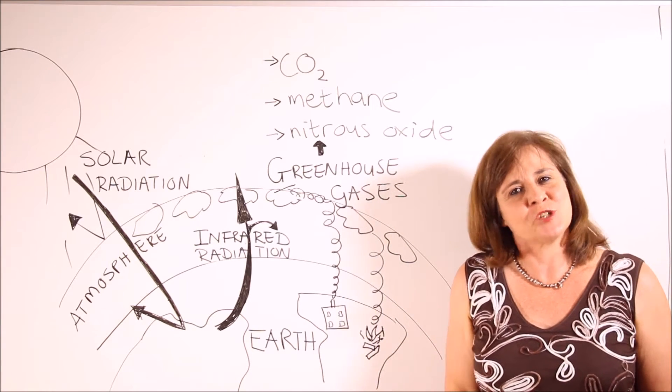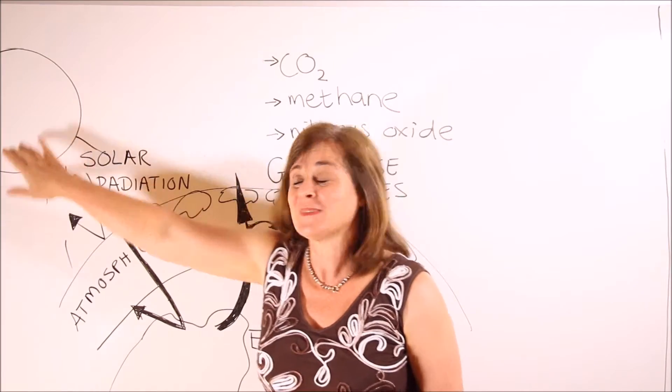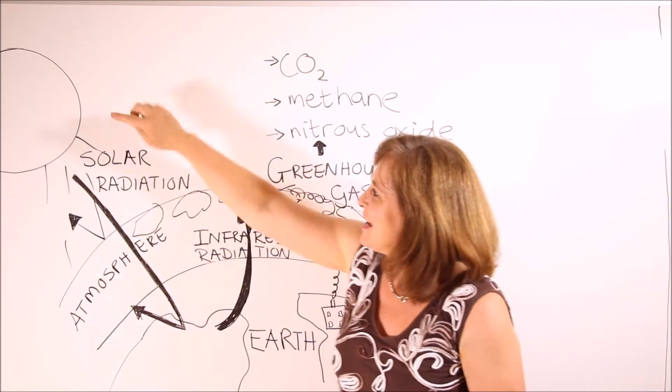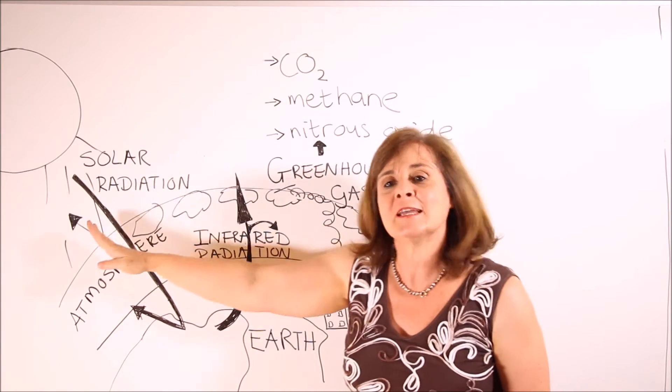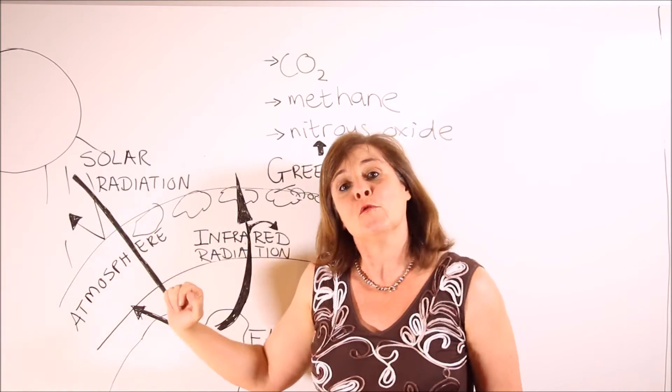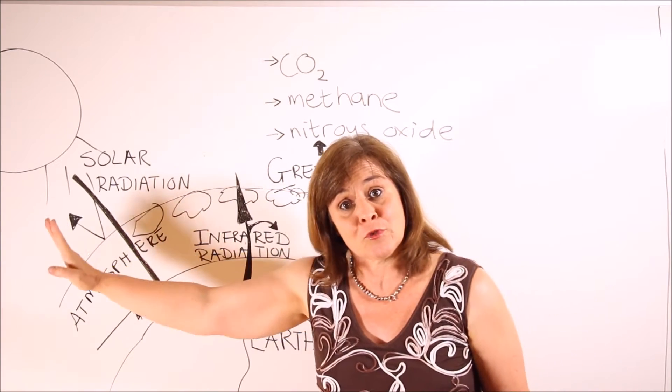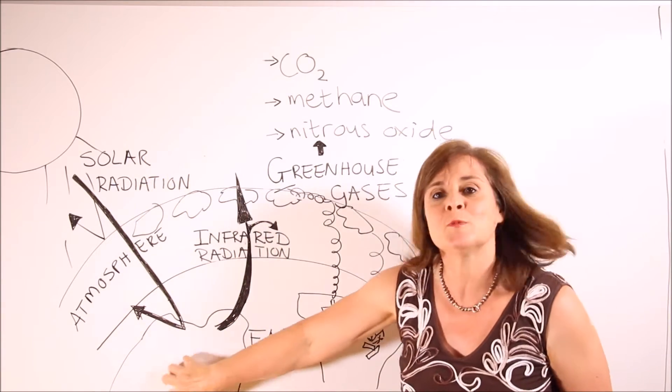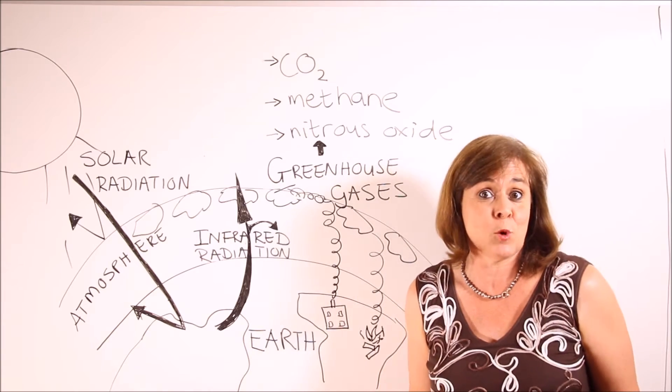And why is it important that we should know about them? Let me explain. This is the Sun. It's not entirely round but use your imagination. The Sun emits solar radiation. Some of this radiation reflects off the atmosphere. Some of it reflects off the earth. But a lot of that solar radiation is absorbed by the earth and it warms up the earth and that's why we can live here because it's warm enough.